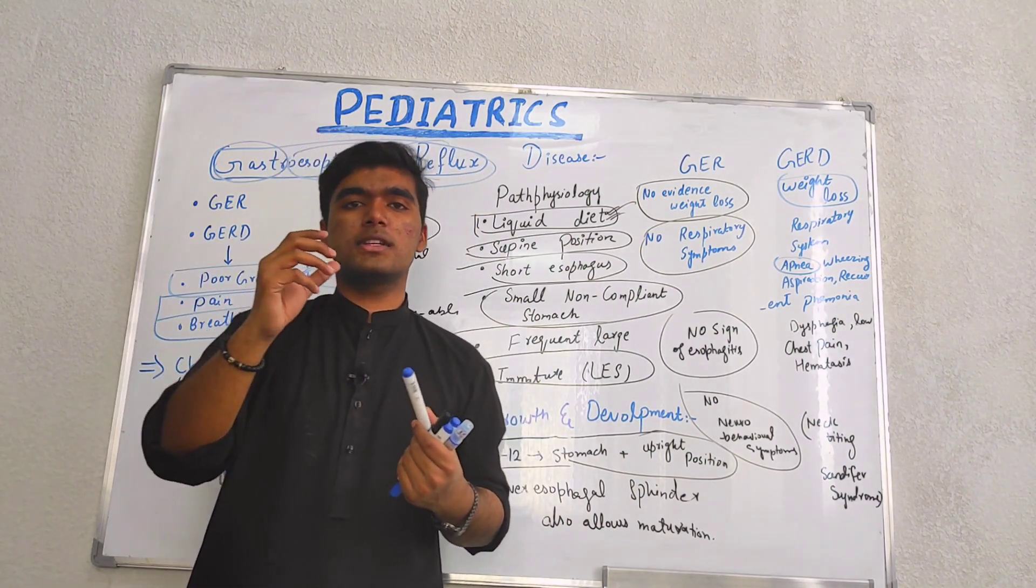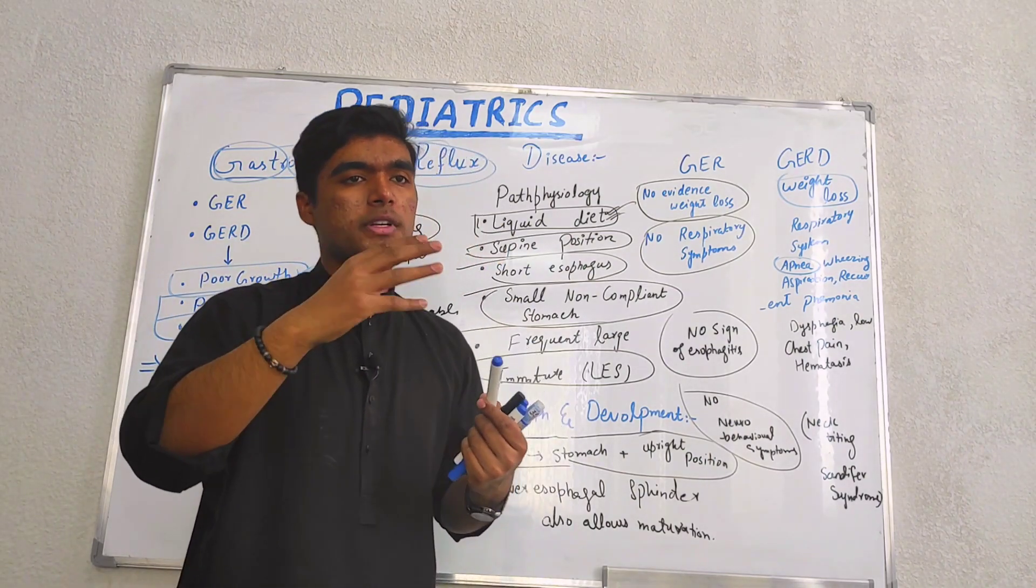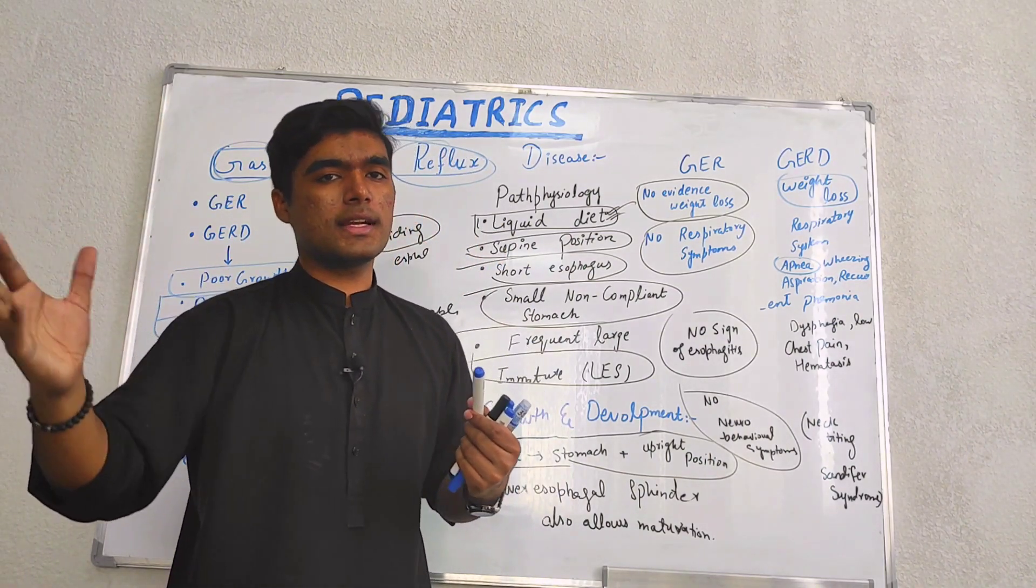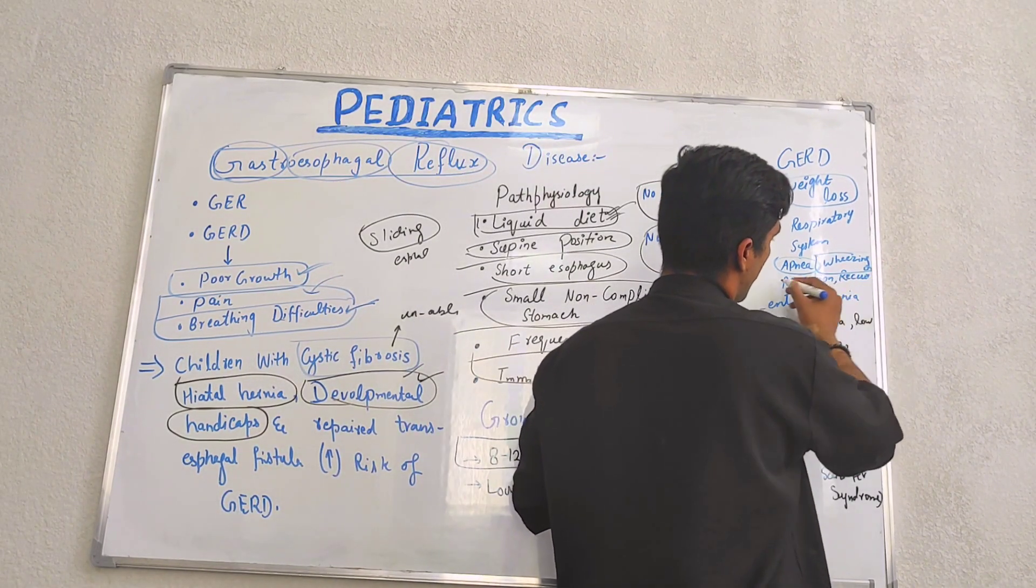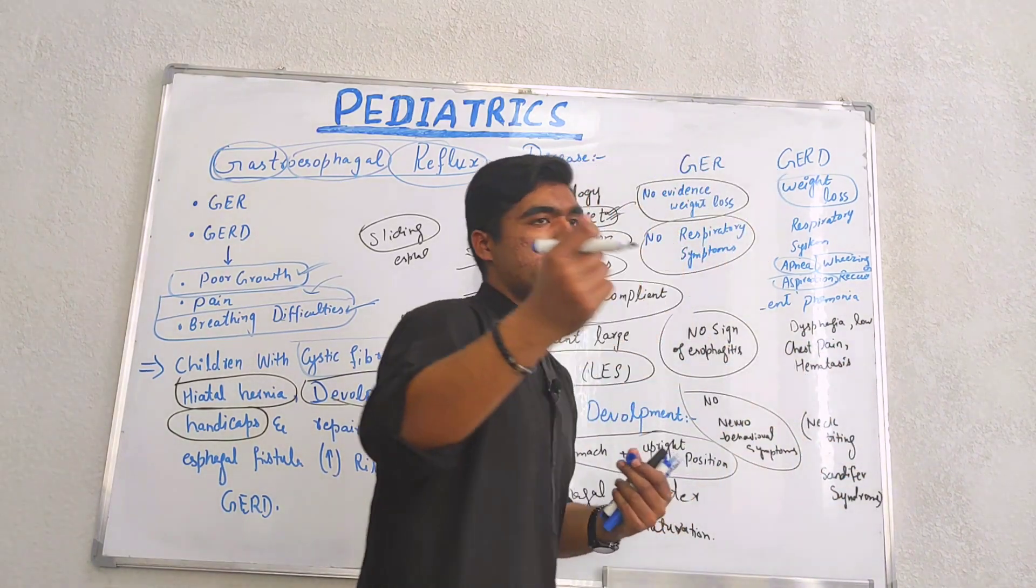Apnea is basically breath-holding capacity in which a person is able to hold for 15 to 20 seconds with bradycardia, wheezing, aspiration—which means entry of food into the lungs.